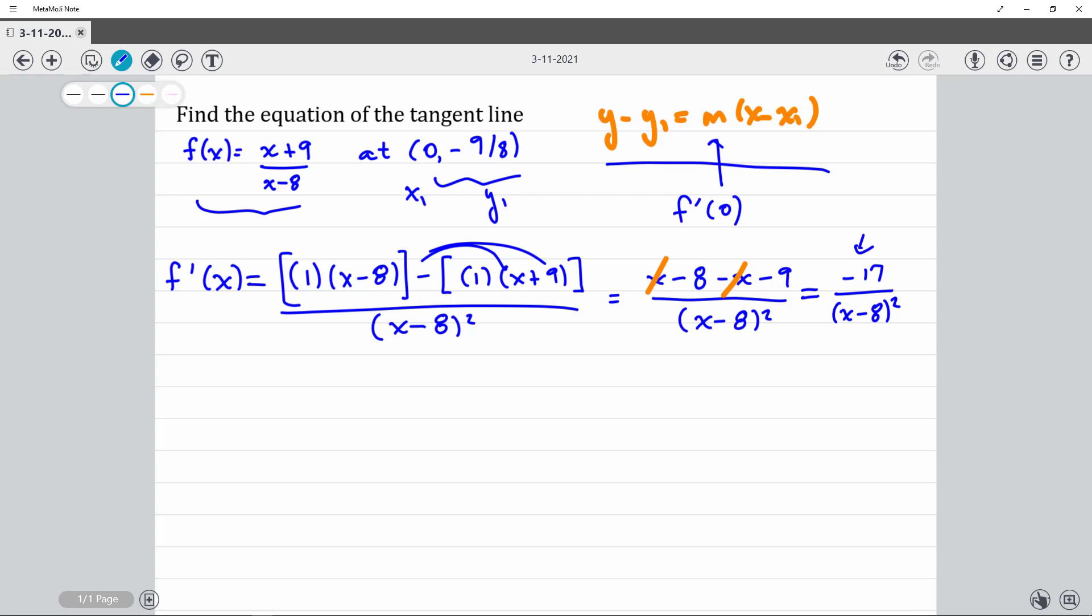So remember what this is. This is the derivative function. Now if I want to find the derivative at a particular x value, I just simply plug in that value of x, and I get negative 17 over 64.